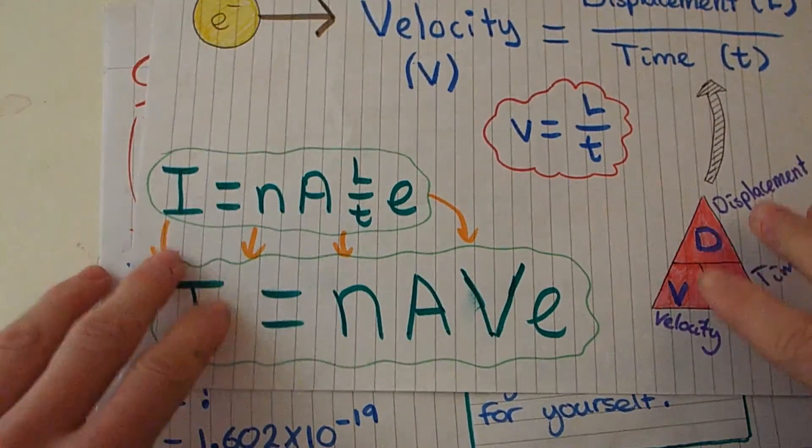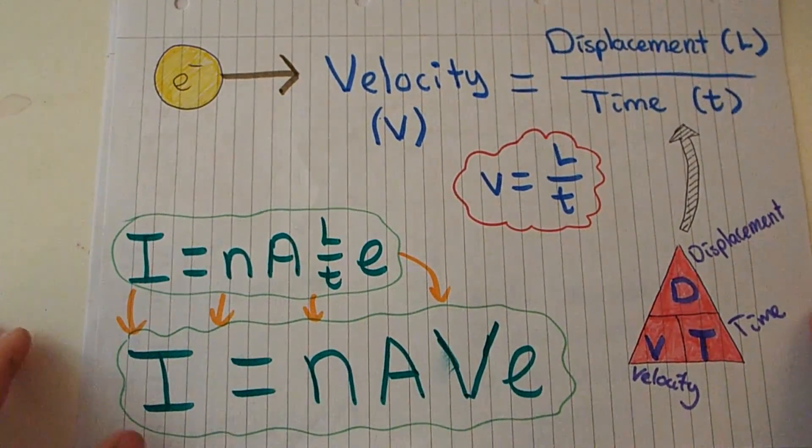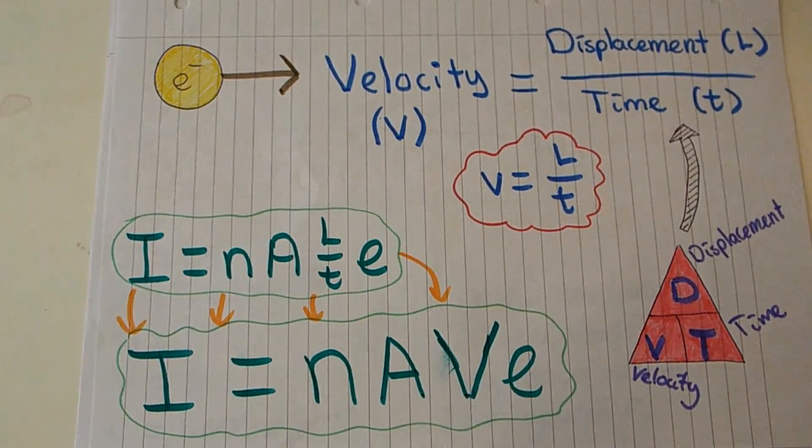Now we want to look at the drift velocity of electrons. The drift velocity is simply the average velocity at which the electrons are moving across the wire, and we know that this is quite simply just the displacement over time, so v equals L over t. Remember this v is no longer volume, this v represents the drift velocity of electrons.